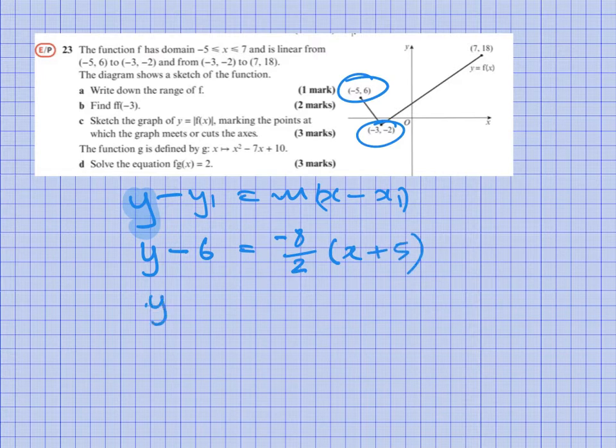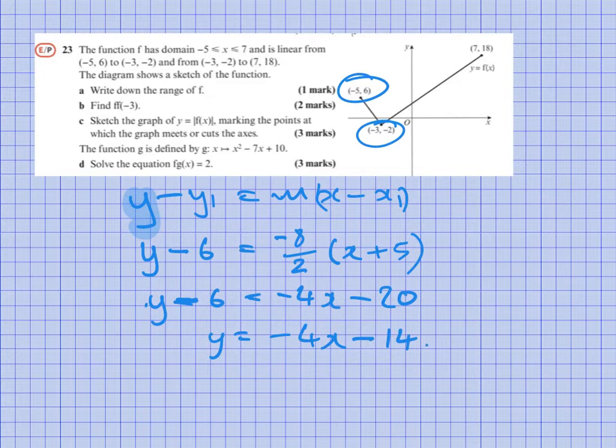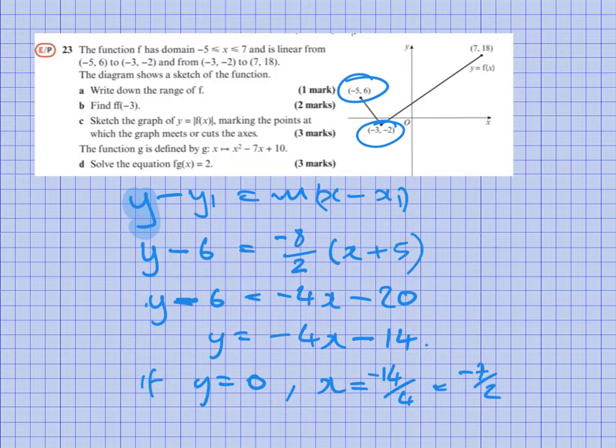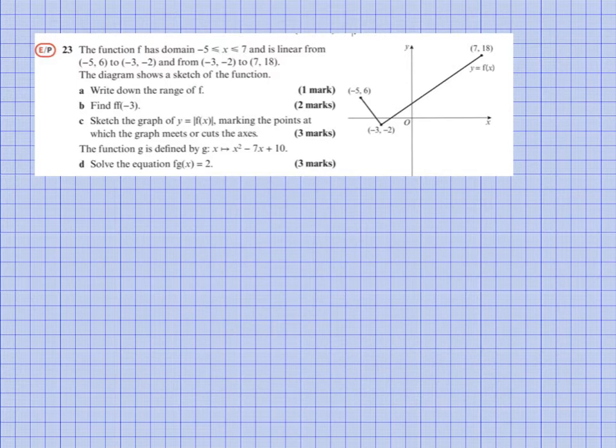Simplifying gets me y - 6 = -4x - 20, so y = -4x - 14. So I need to find when y = 0. If y = 0, then x = -14/4, which is -7/2. Again, that makes sense: -3.5, because that's close to where you'd expect it to be. So now we know both of the points. I can just discard this piece of working.